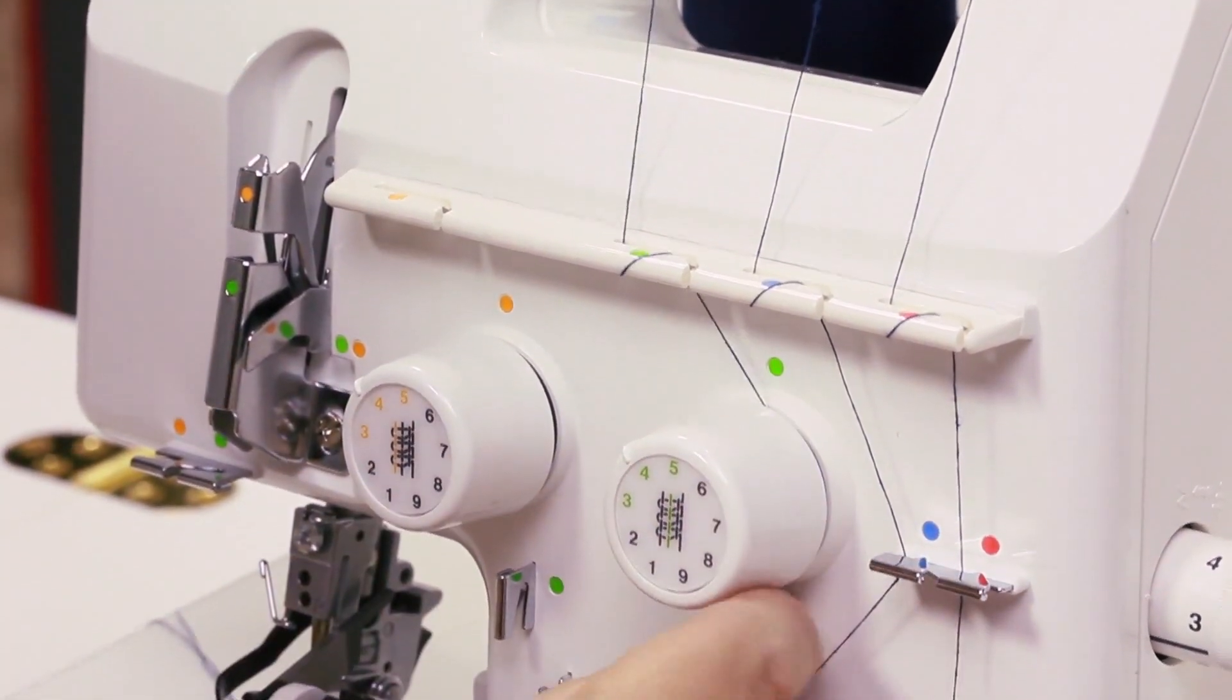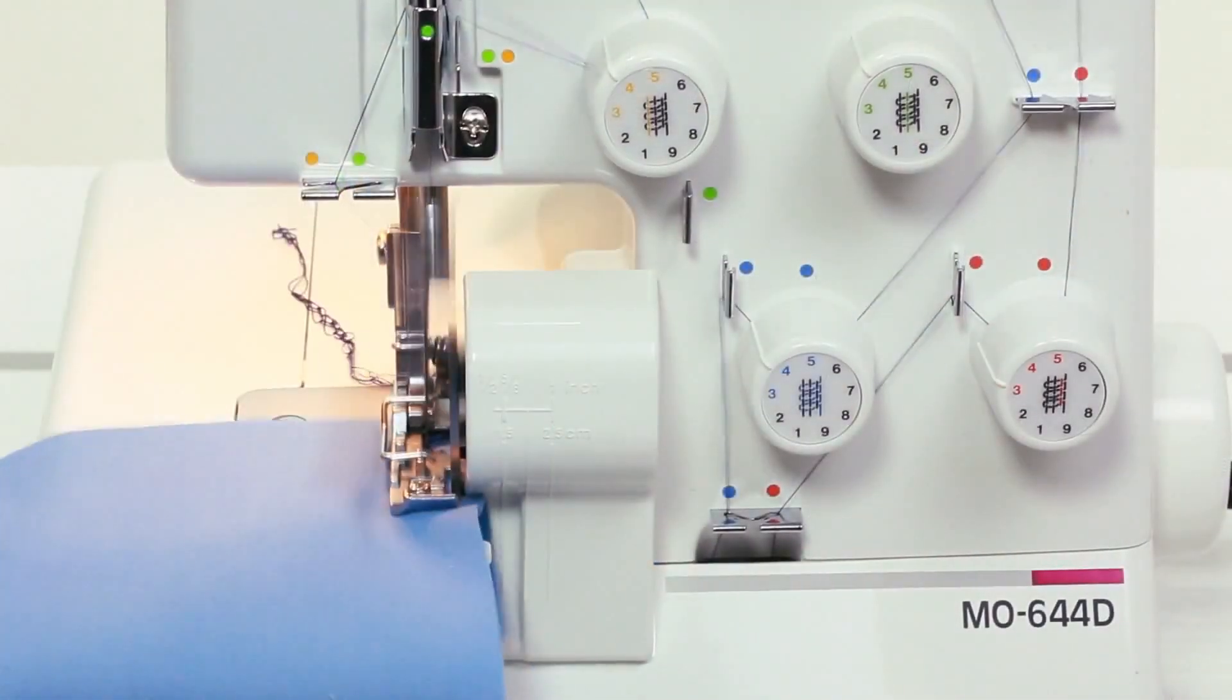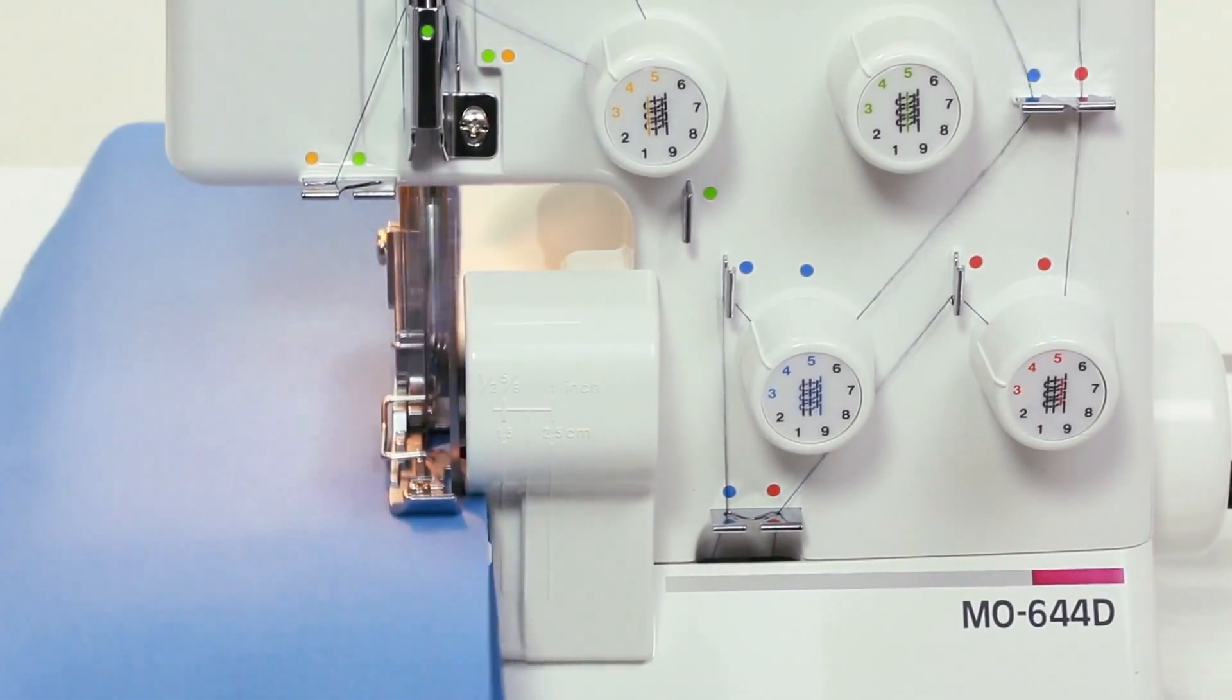The M0644 sews at a maximum speed of 1500 stitches per minute, so you can speed through any project with ease.